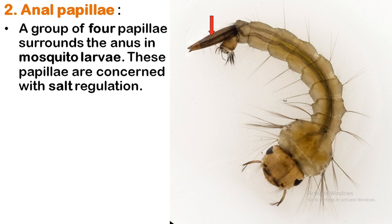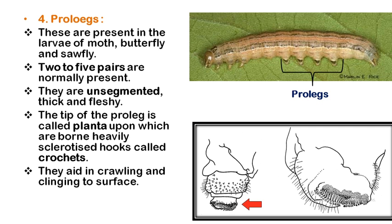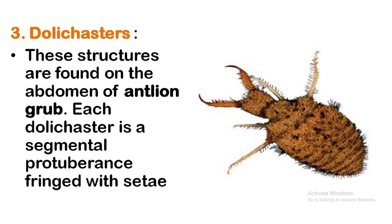The dolly casters are structures found on the abdomen of the antlion grub — the neuropteran antlion grub. A dolly caster is a segmental protuberance fringed with setae. These abdominal dolly casters are fringed with setae.